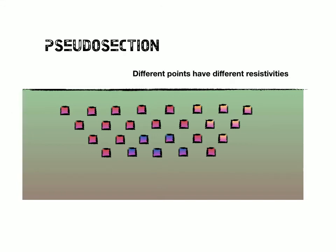Now, the other complication here is that these different points we've measured have different resistivities. Some might be low here. Some might be high here.